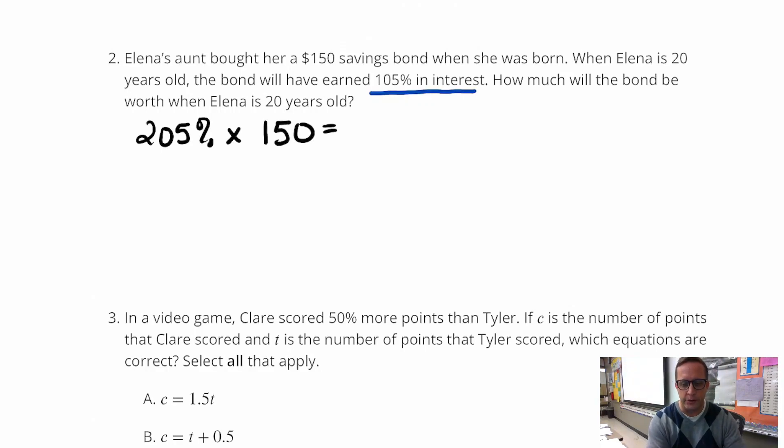It should be like a million dollars, right? No, it's not going to be that. But we're going to make sure we change this to a decimal. Move the decimal over two places to the left. And then multiply that by 150. And I get $307, $307.50.